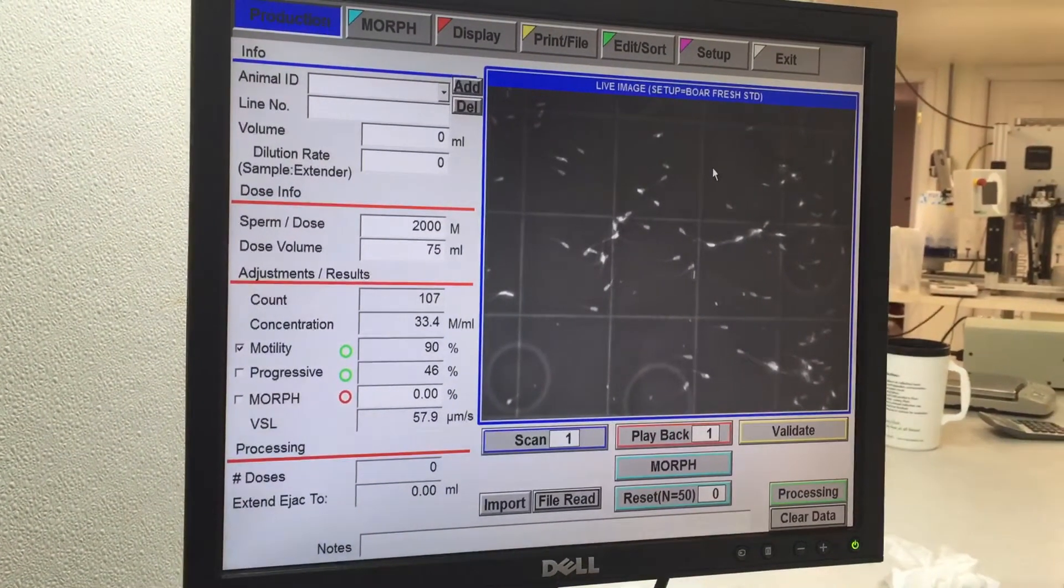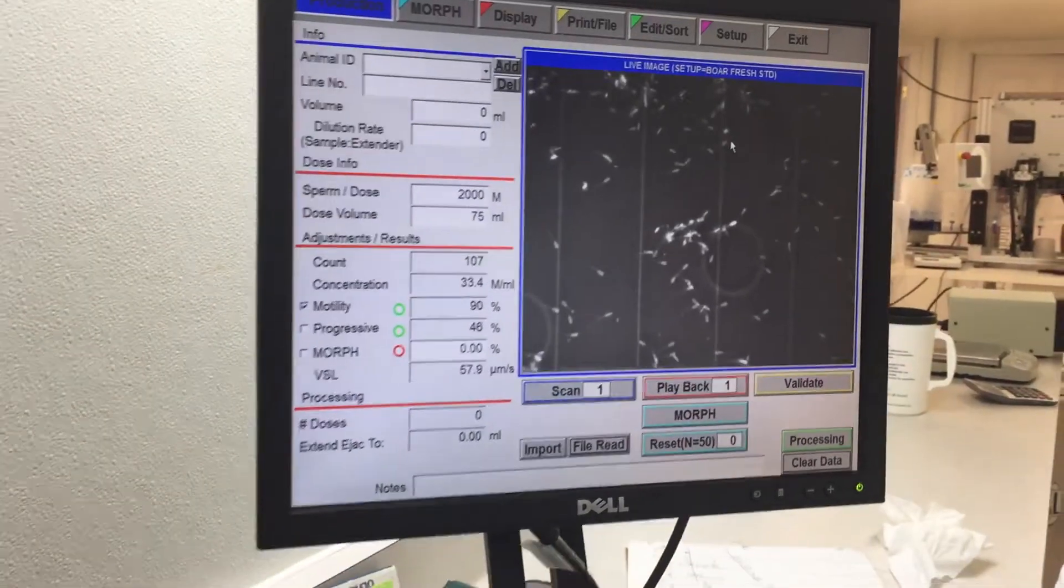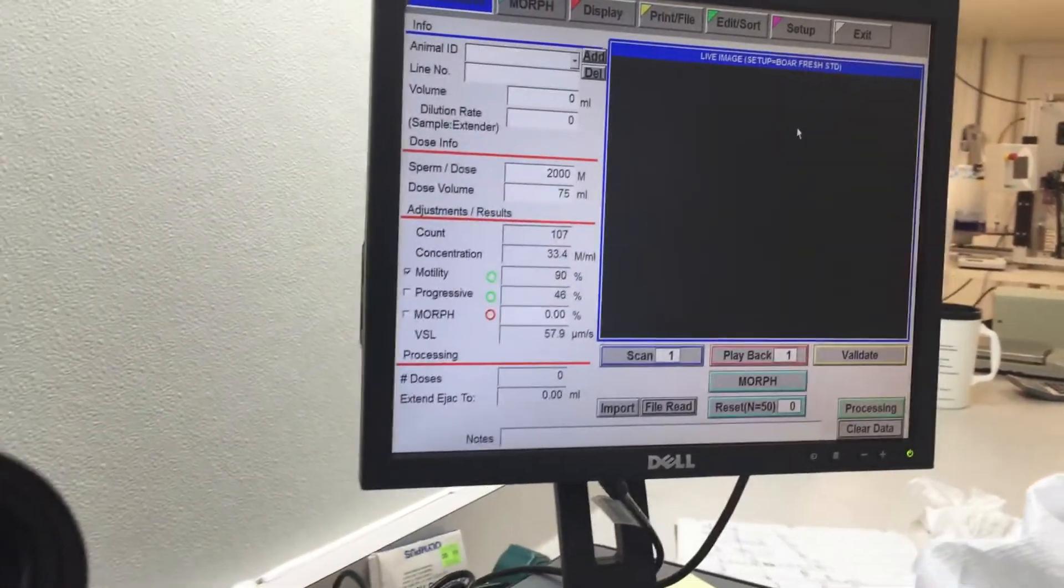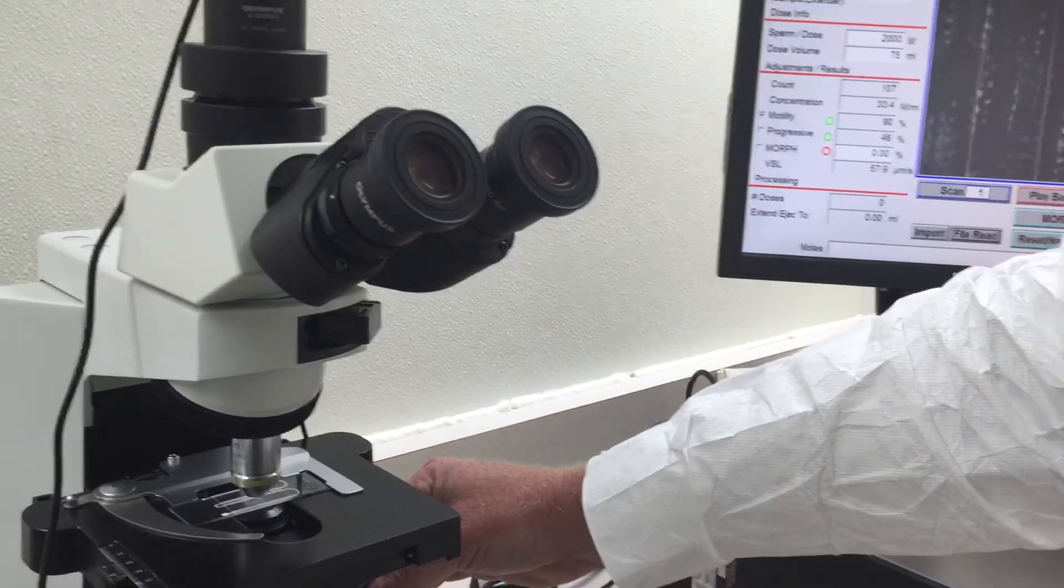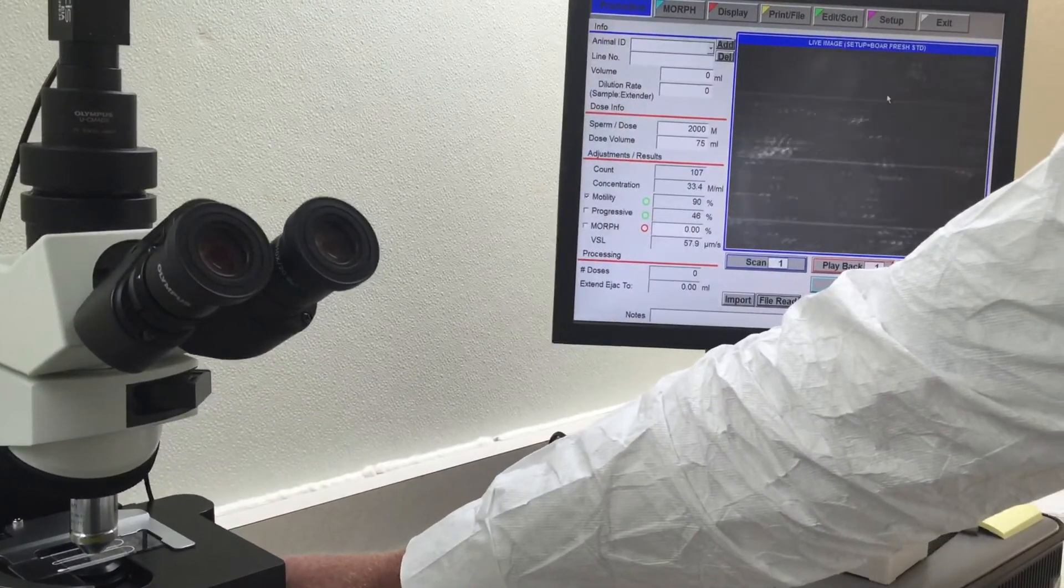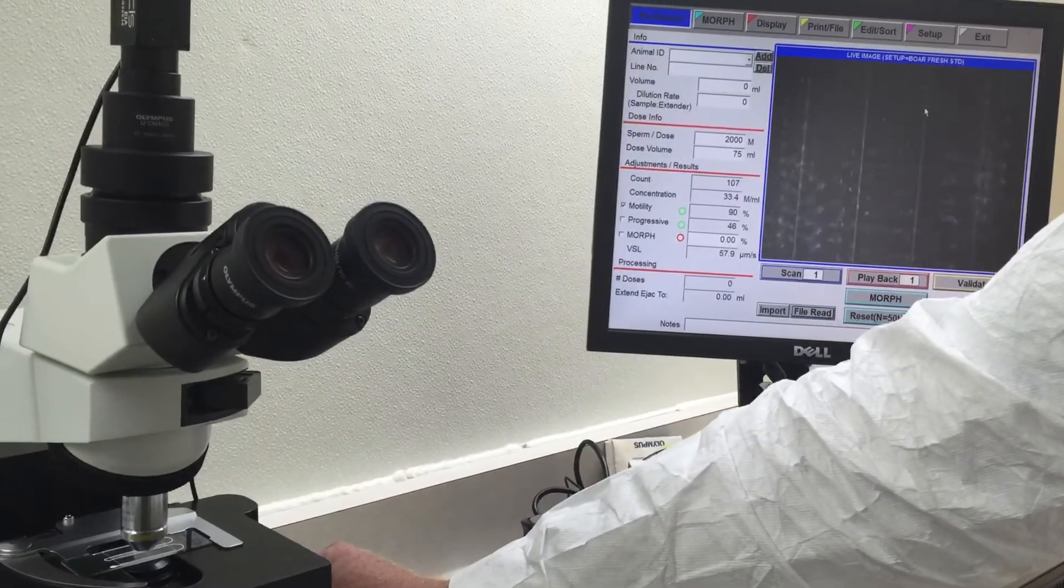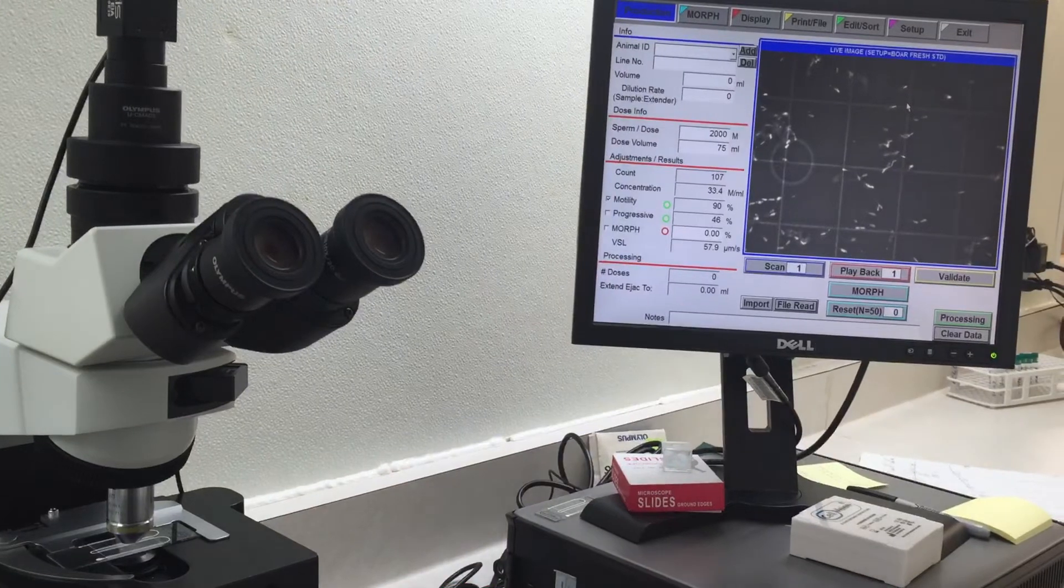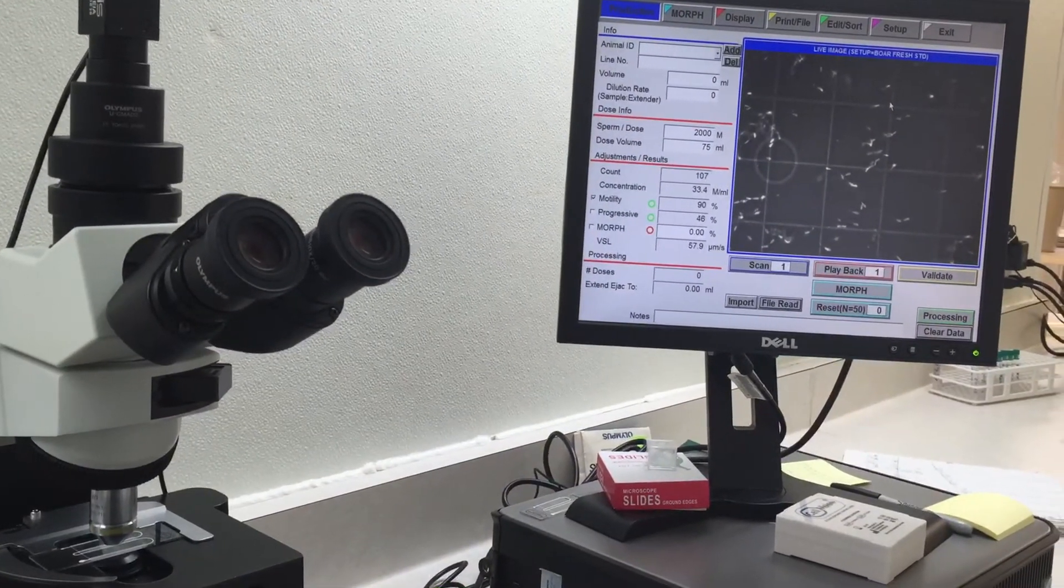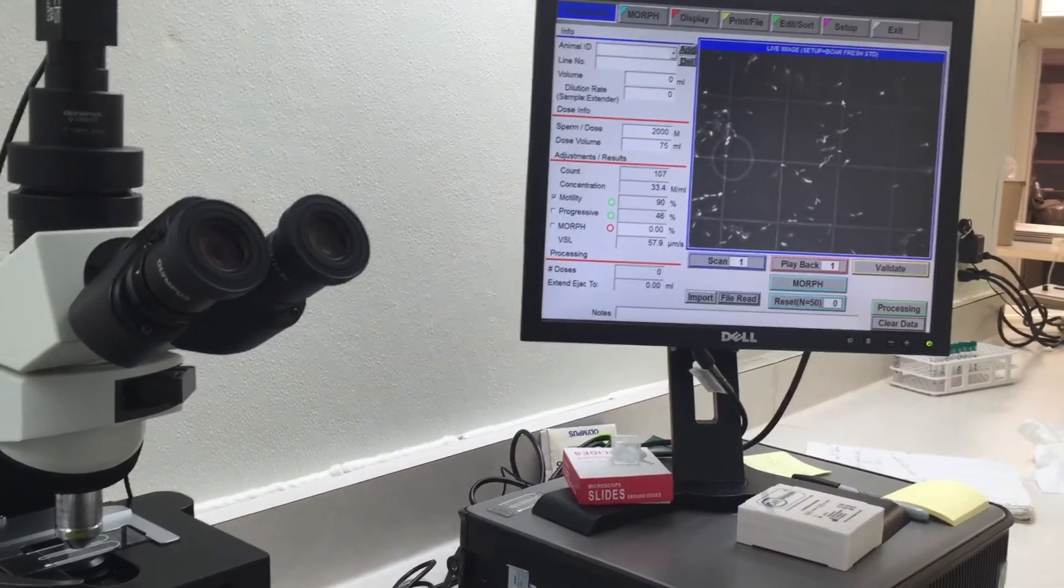So in that row of ten, we have forty-two cells. To do this accurately, we would do another count in this chamber, then move to the other chamber on the same slide and select two more rows to count. We would average the four. For purposes of this video, I'm just going to count those forty-two.